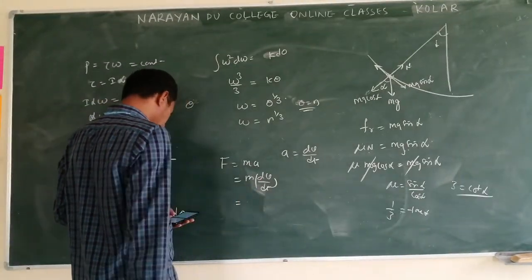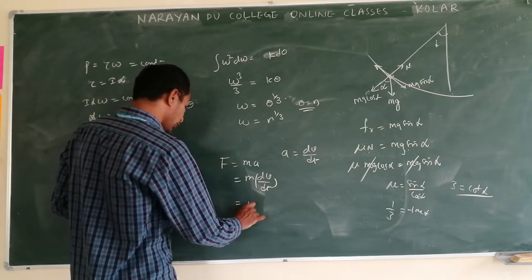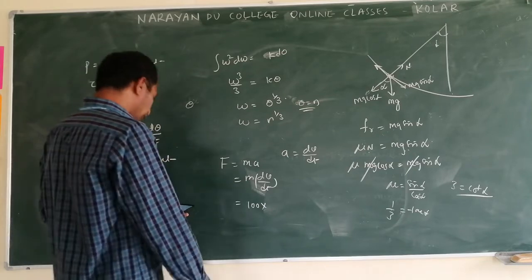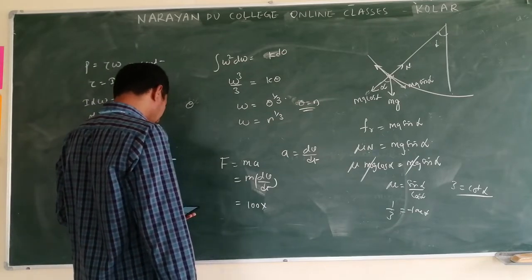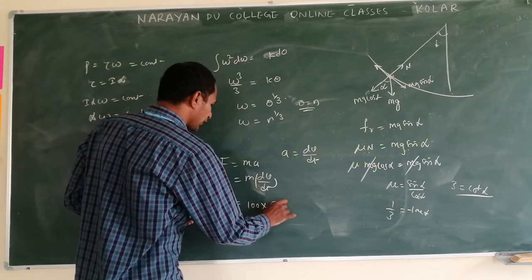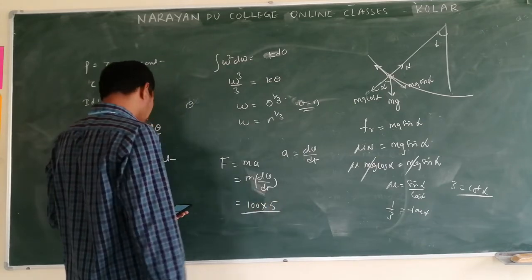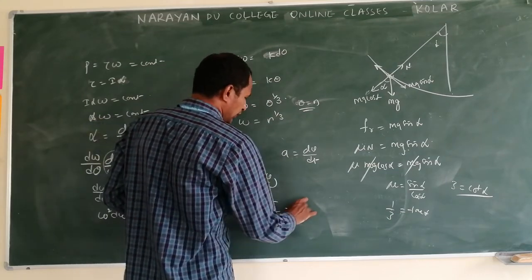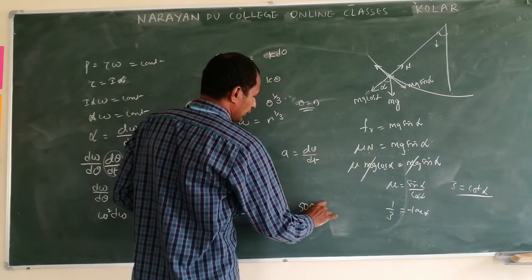Mass is what? Mass is given as 100 kg, right? Into velocity - how many meter per second velocity is moving? 5. Now, how is it going to stop? 1 by 10. 1 by 10 means 0.1. So this is 5,000.